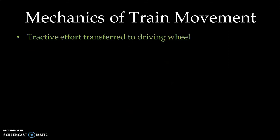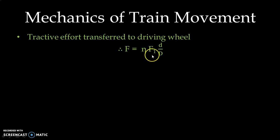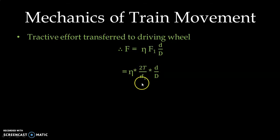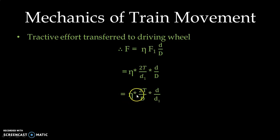Now let us find the tractive effort transferred to the driving wheel, expressed as eta × F1 × (d / D), which is the ratio of the diameter of the geared wheel to the driving wheel. Substituting the value of F1 = 2T / d1, the expression can be rewritten in simplified form as: F = eta × 2T / D × (d / d1). The ratio d / d1 is the gear ratio gamma.